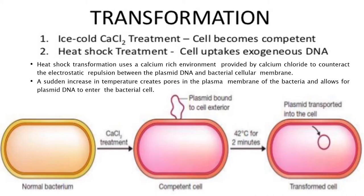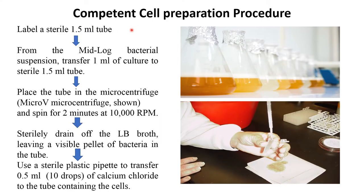Now for the competent cell preparation procedure. First, a sterile Eppendorf tube of 1.5 ml will be taken and labeled. Then from the mid-log bacterial suspension, transfer 1 ml of the culture into the sterile 1.5 ml tube. Place the tube in a microcentrifuge and spin for two minutes at 10,000 rpm.